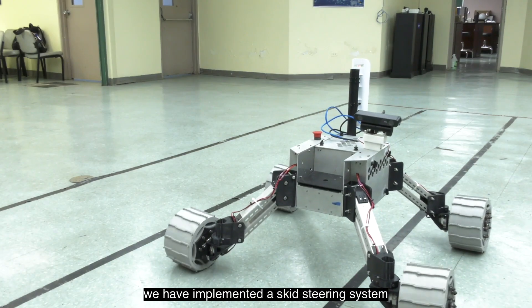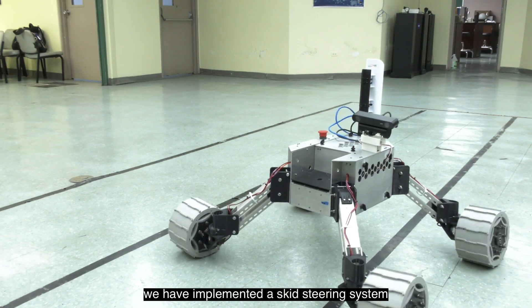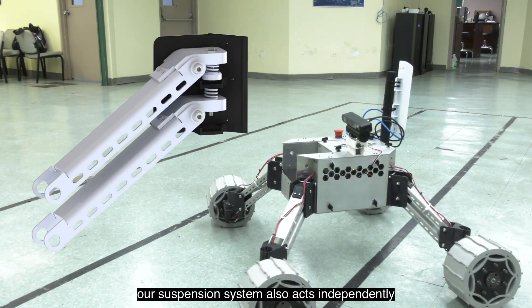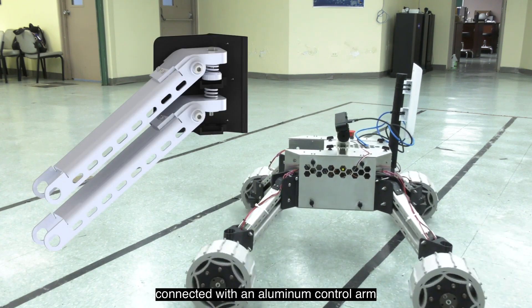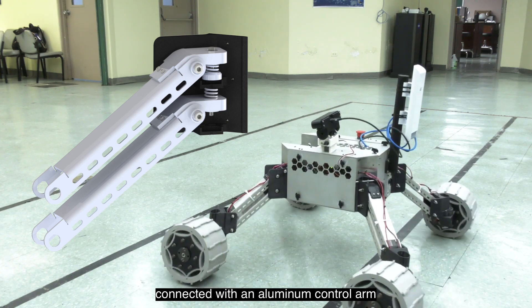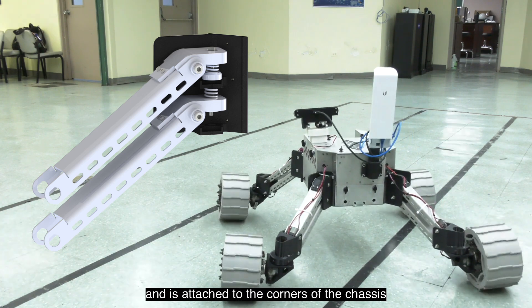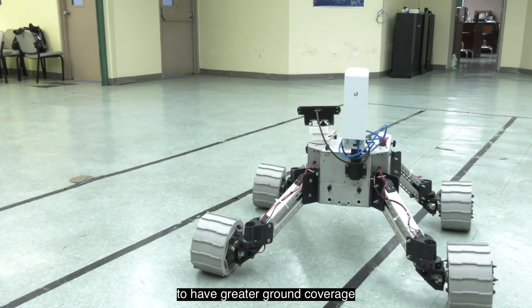To steer our rover, we have implemented a skid steering system where we control each motor independently. Our suspension system also acts independently with the steering connected with an aluminum control arm. The suspension system is composed of a spring acting as a dampener and is attached to the corners of the chassis to have greater ground coverage.